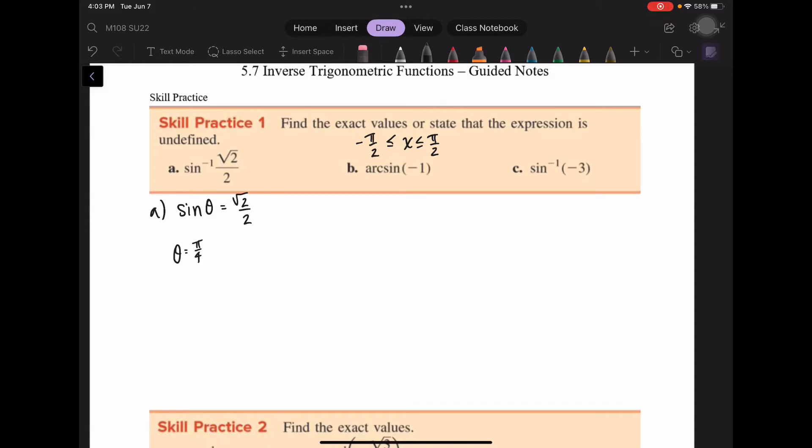Sine is root 2 over 2 in the second quadrant as well, but that does not fall in the interval negative pi over 2 to pi over 2.